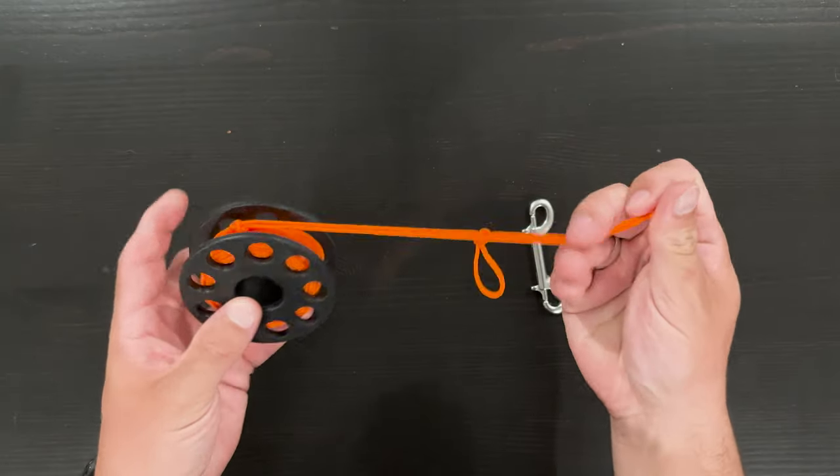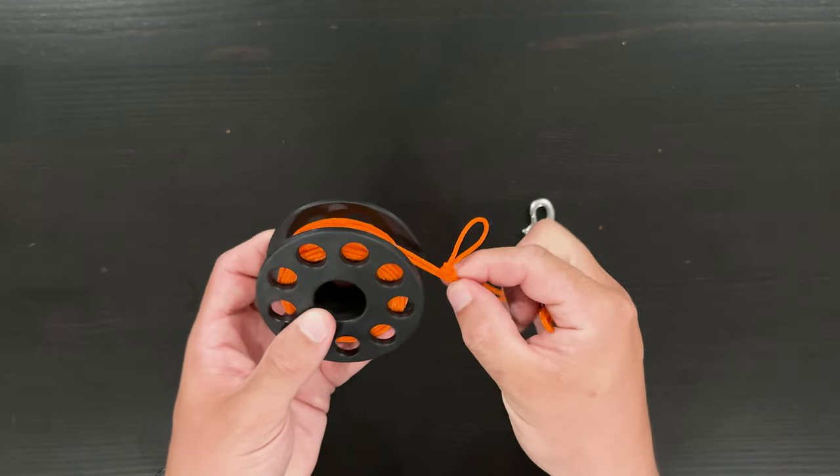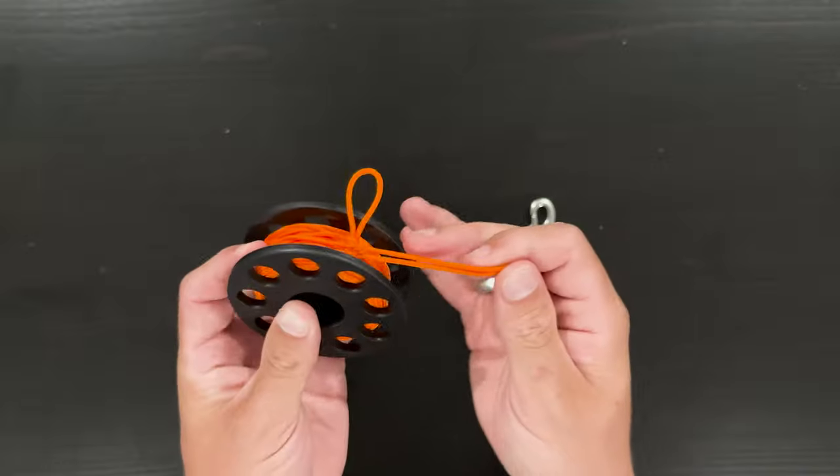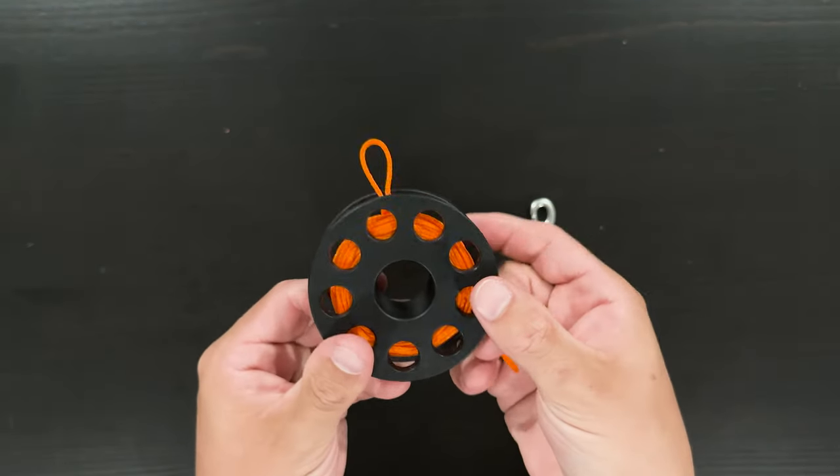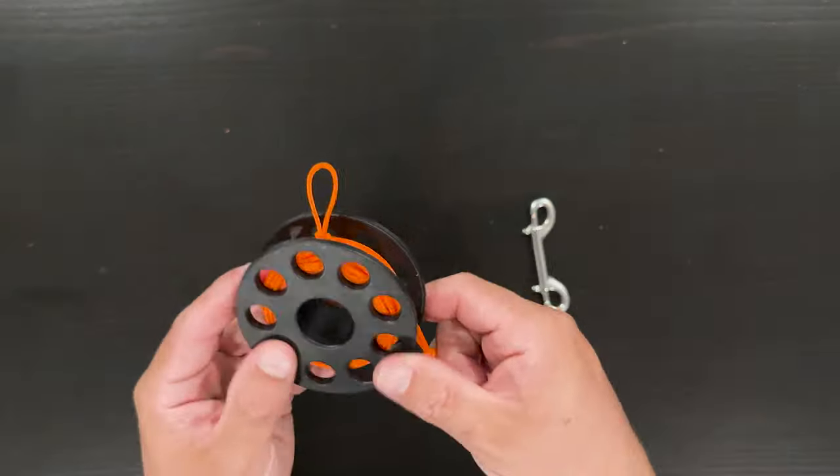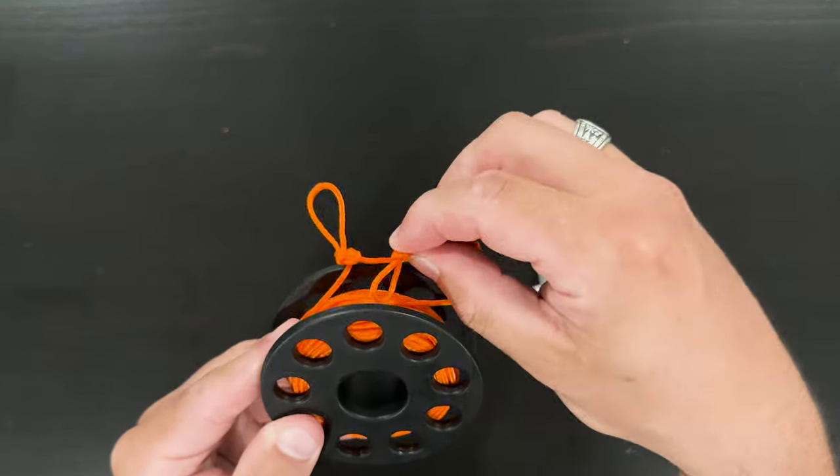Now that we have our loops tied in our line, we can store that line wrapped back around our spool and then store the spool for use underwater. First, when we wrap this line back up, we want to make sure that the tiny loop that we made halfway through our big loop is sticking outward because that's going to be a handle that we can pull on as we wrap that line. This is what we'll pull on even if we have gloves on, making it easy to pull the lead line off the spool.